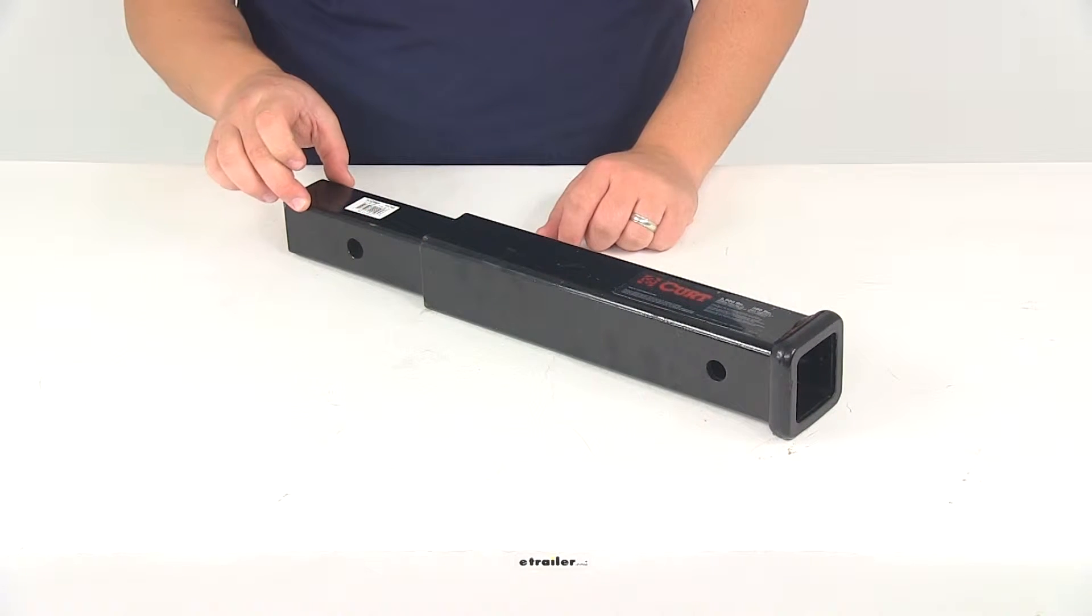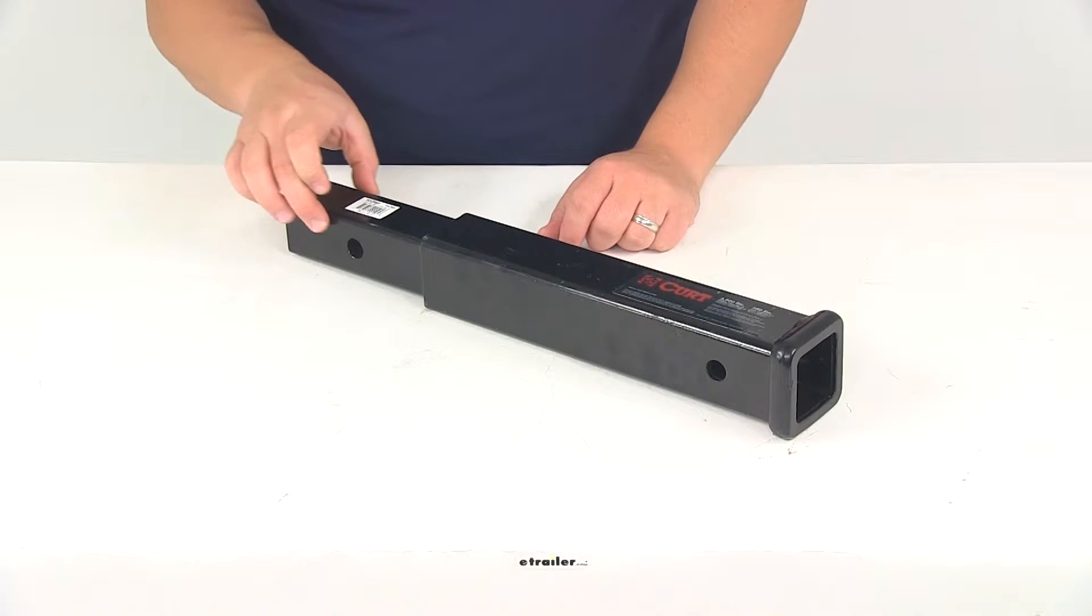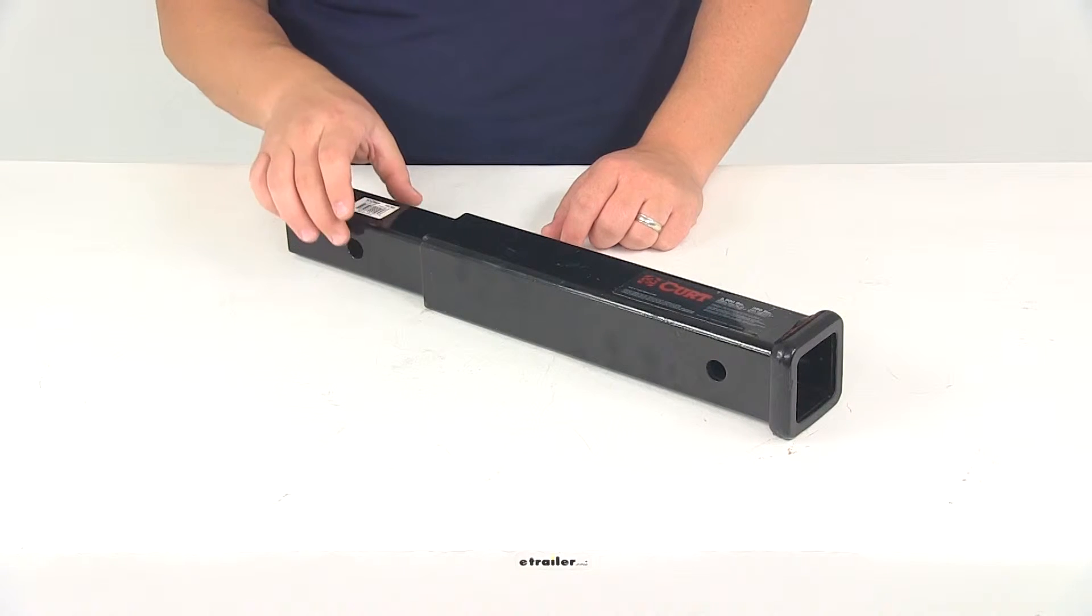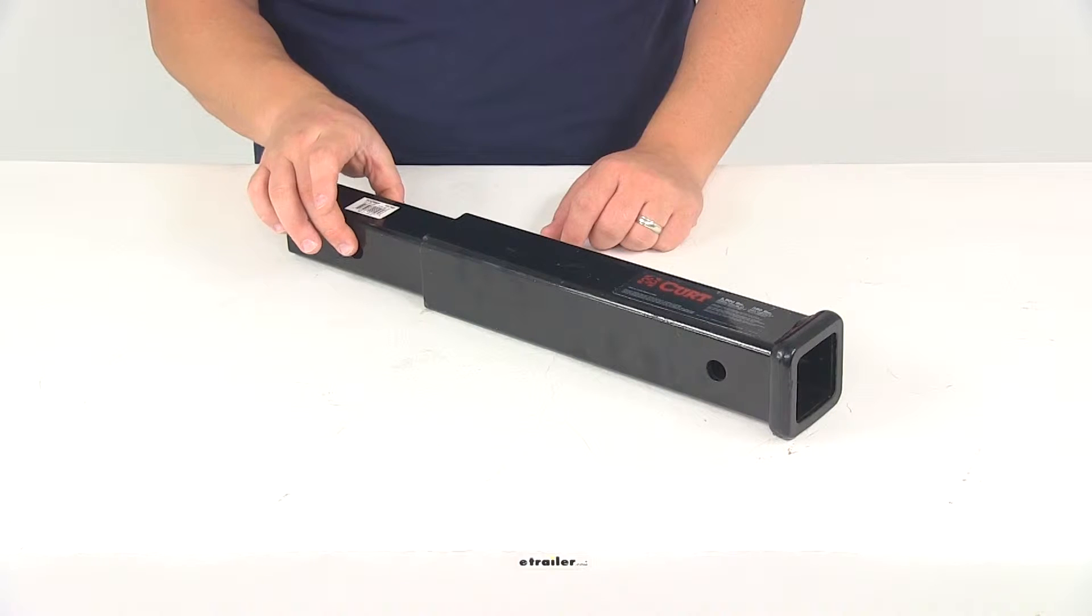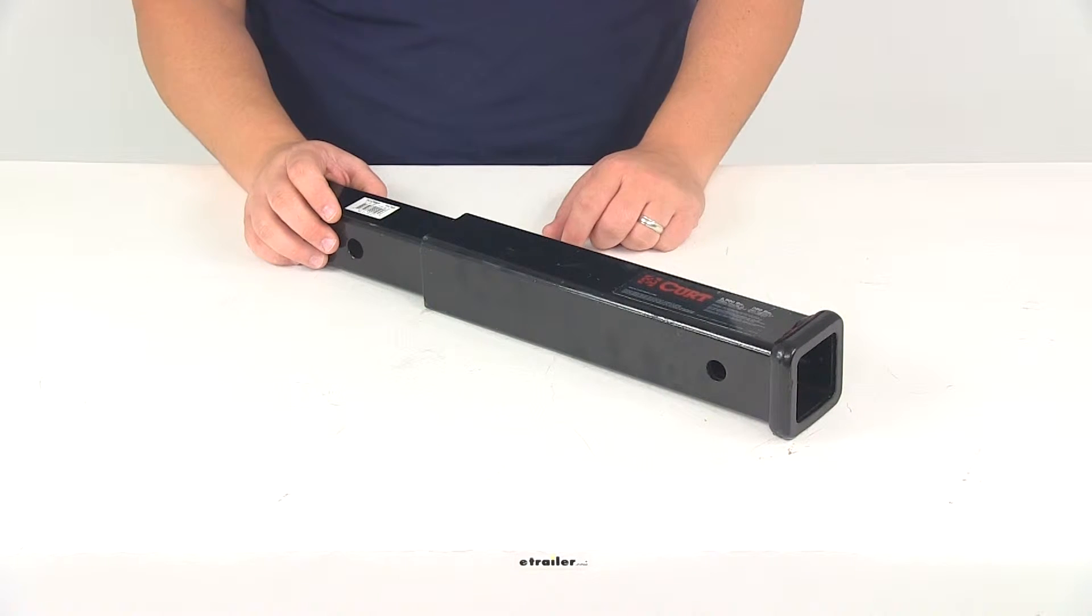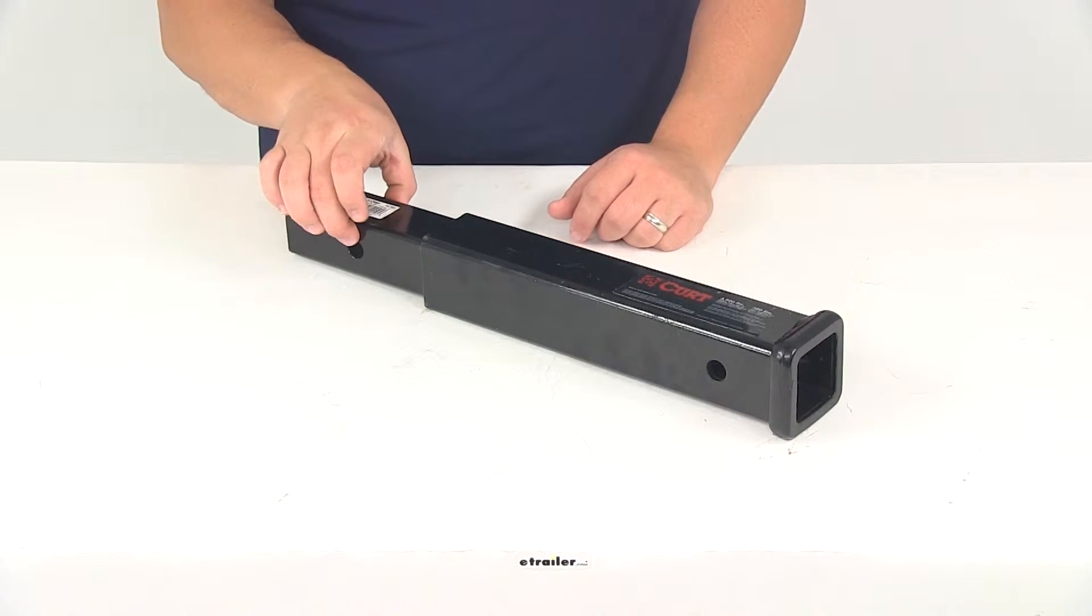This portion slides into your 2-inch by 2-inch hitch. You're going to line it up with the pinholes in your hitch and secure it with a hitch pin and clip or a hitch lock. Those items are sold separately and can be found right here at eTrailer.com. It's going to be a standard 5 1/8 inch pinhole.